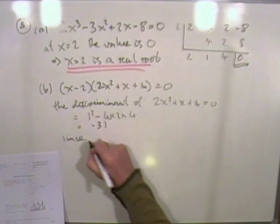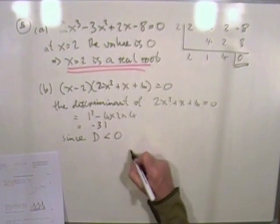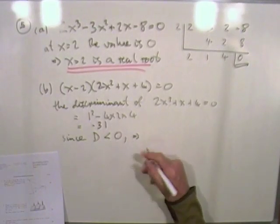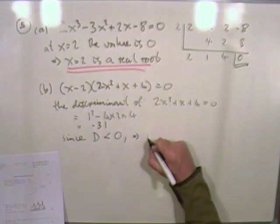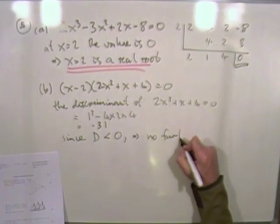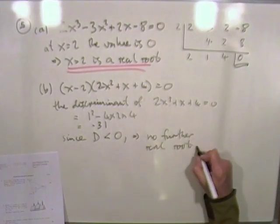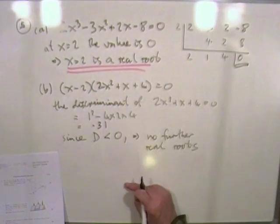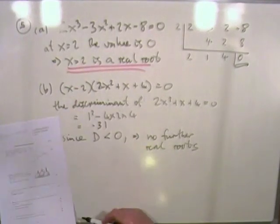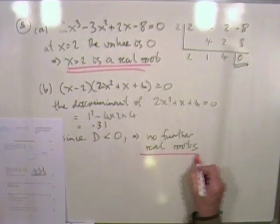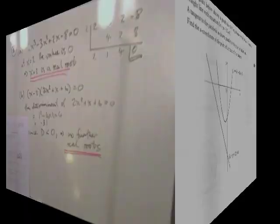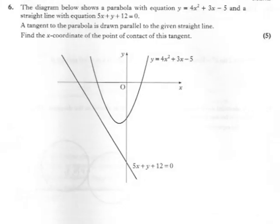Well, since the discriminant is less than 0, that means there's going to be no further real roots from this quadratic here, the only root being x equals 2. And that's question 5. So, question 6 now. Pause and try question 6.